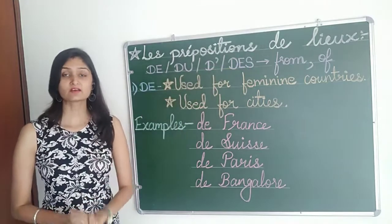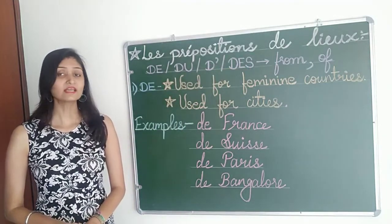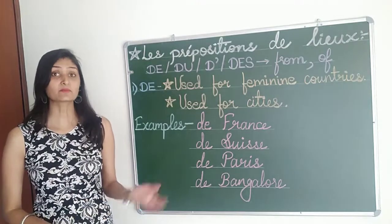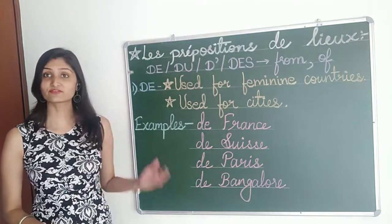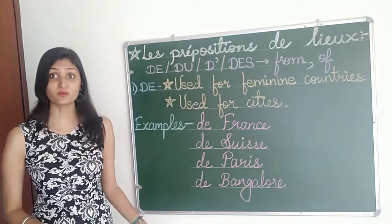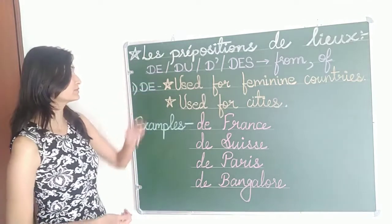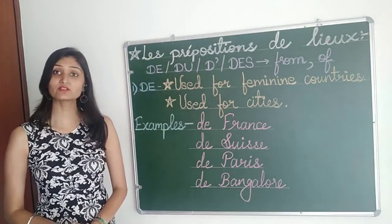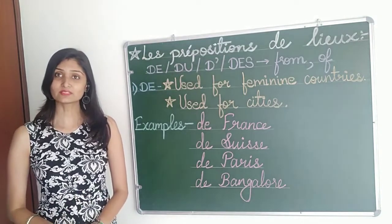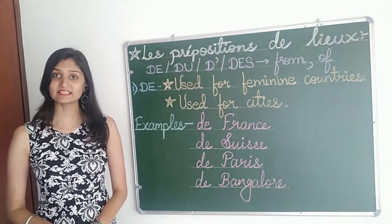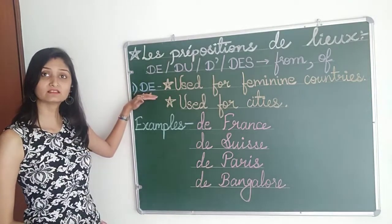These prepositions mean 'of' or 'from'. Whenever we say I am coming from India, I am coming from Paris, I am coming from France. So where are these four prepositions going to be used? There are some rules. The first one, let's take de, d-e, de.